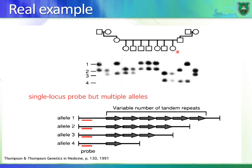Looking at the children, you would expect them to have either alleles one and three from the mother, or alleles two and four from the father. You can see that pattern — this is from the mother, this is from the father, and so on.